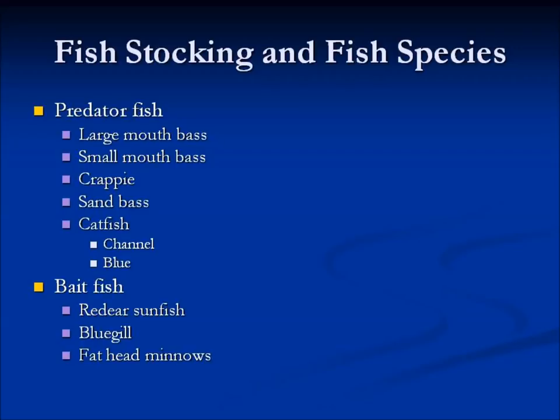Regarding bait fish: many people like to feed their fish with supplemental fish foods from farm and ranch stores, but a better choice is to stock your pond with bait fish. The red-eared sunfish is a good one, and bluegill is another really good one. Put those in and let the predator fish — largemouth bass or channel catfish — feed on those fish rather than feeding them fish food.